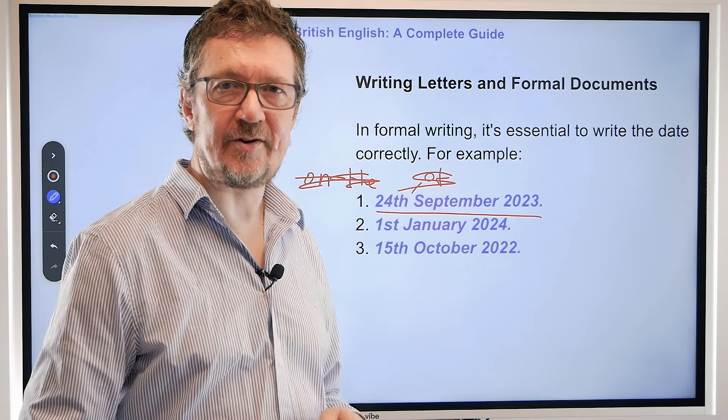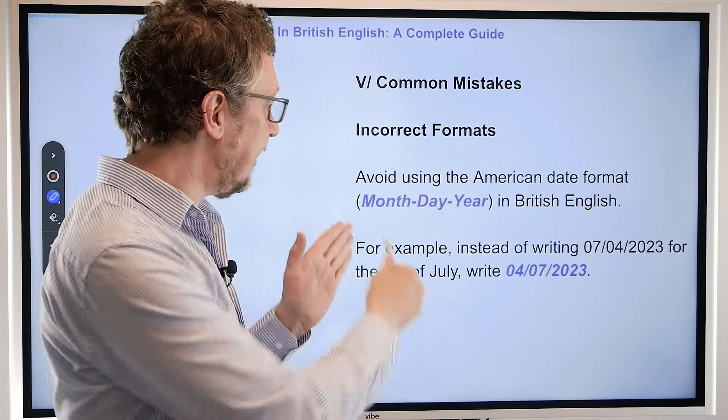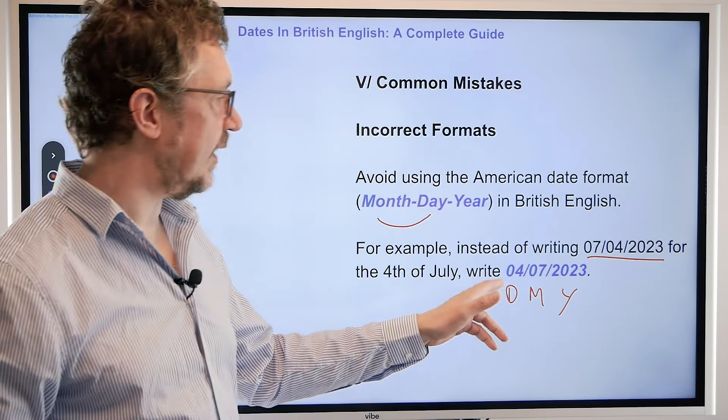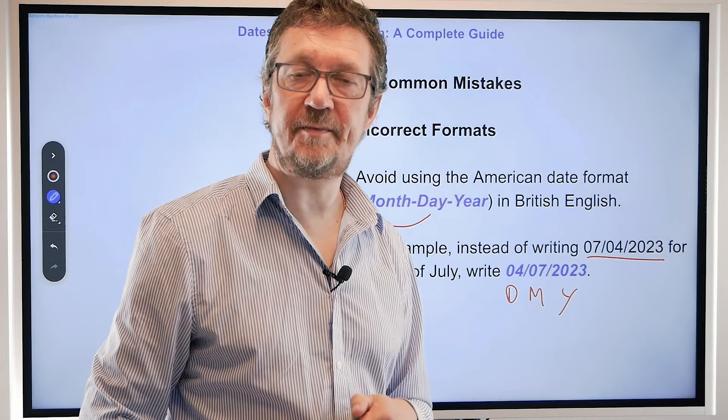A common mistake when using dates in English is using the American format in the British context. People are expecting you to say day, month, year, but you end up saying month, day, year. There could be some confusion — you might even end up with a meeting on the wrong day. Make sure when you write your dates in the abbreviated form in British English you use day, month and year. So instead of writing 07/04/2023 for the 4th of July like the Americans would, we write 04/07/2023. Otherwise you could end up with somebody turning up to the meeting three months ahead.